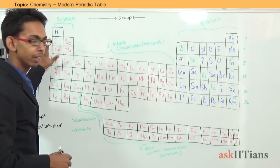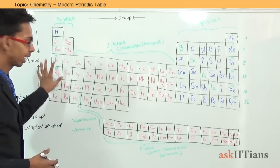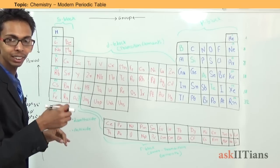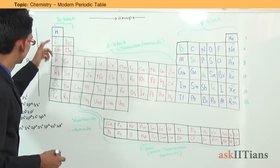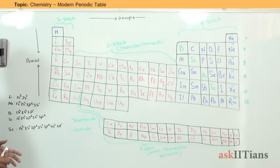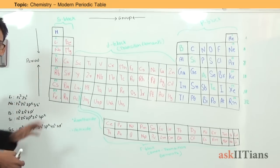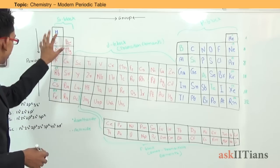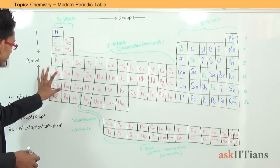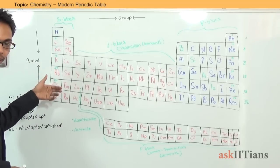The classification is based on electronic configuration. Whenever we write the electronic configuration of S block elements, we find that the last electron enters the S subshell. For example, lithium has atomic number 3 and its electronic configuration is 1s2, 2s1 — the last electron is entering the S orbital. So whenever the last electron enters the S subshell, the element belongs to the S block.